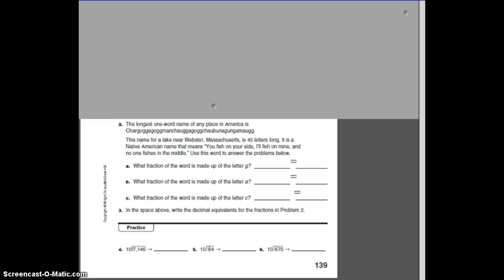Alright, so our next one now says, let's see. The longest one-word name of any place in America, oh boy, I don't know if I can read that. This name, for a lake near Webster, Massachusetts, is 45 letters long. It is a Native American name that means, you fish on your side, I'll fish on mine, and no one fishes in the middle. Use this word to complete the next problem below.